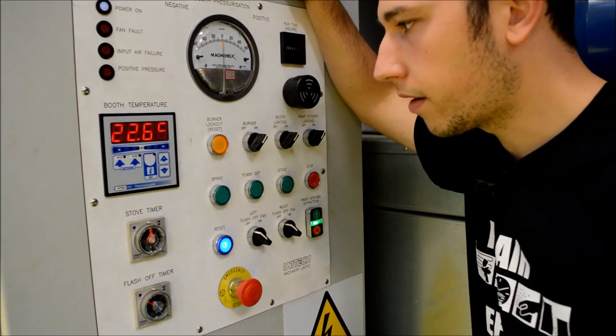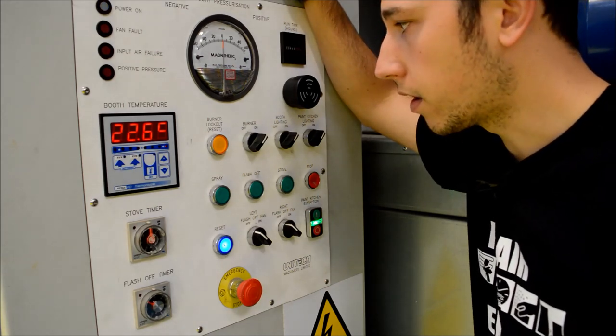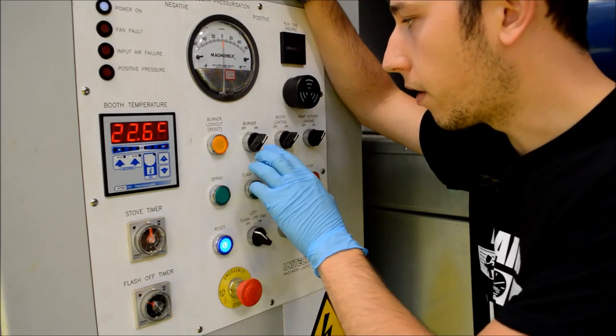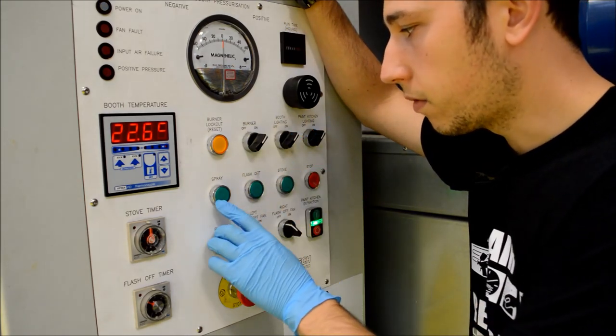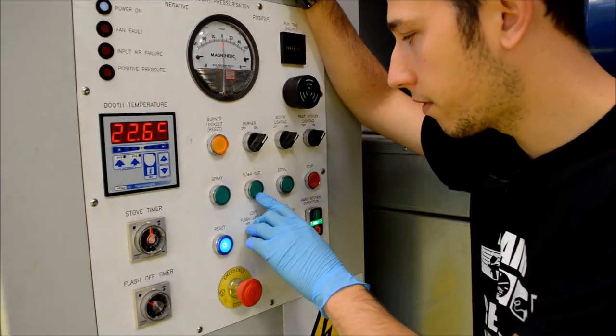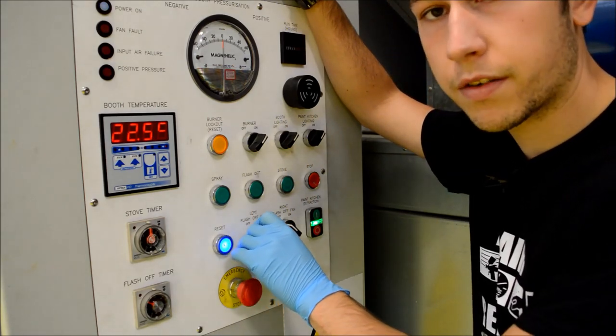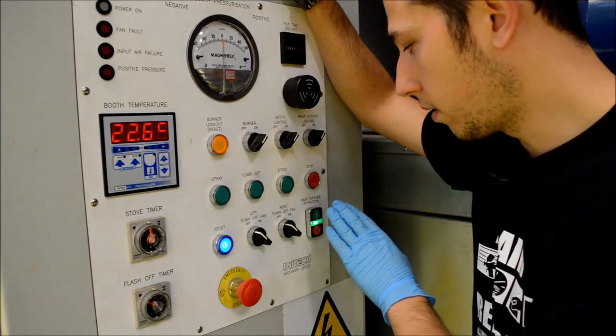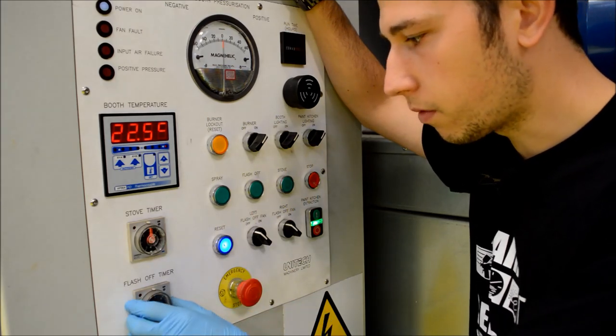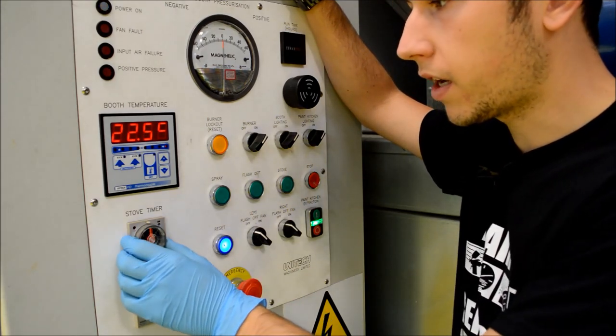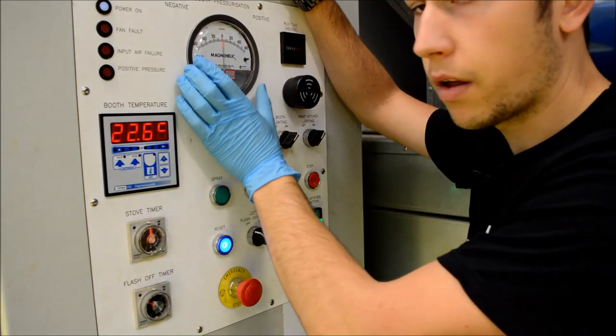So we're just going to take a look at the spray booth control panel. I'm going to run through the controls first and what they do. We've got the burner lockout reset, the burner on-off switch, booth lighting, mixing room lighting, spray on button, flash off button, stove, stop button, reset, flash off fans for the left and right sides of the booth, mixing room extraction, emergency stop button, flash off timer, stove timer, and the spray and bake heat settings controls. We've also got the magma helic gauge.